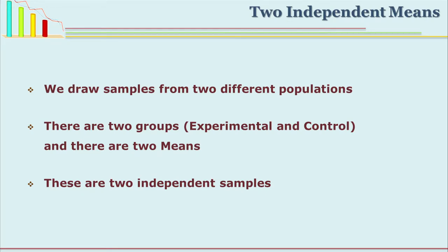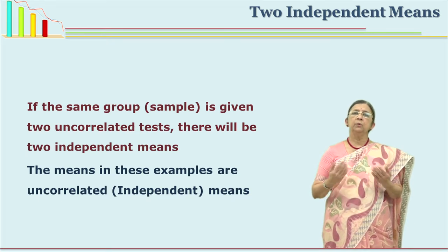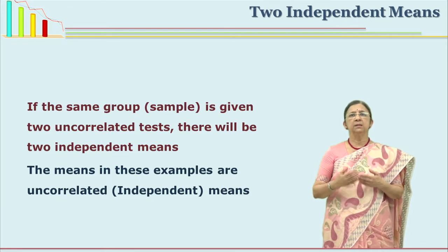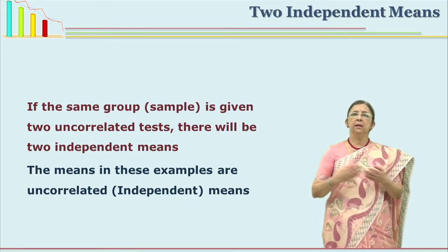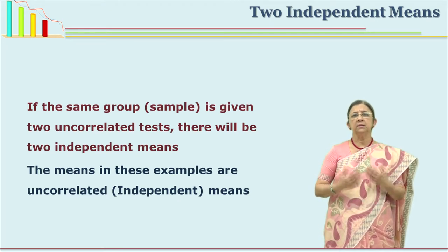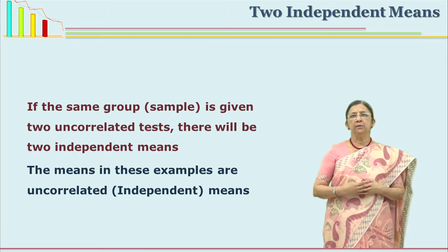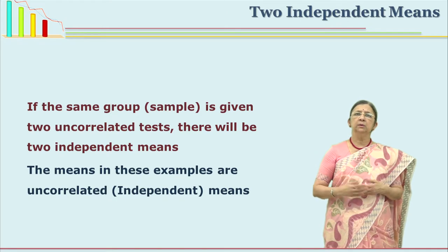Let us first see the difference between two uncorrelated or independent means. For example, if you take two groups — experimental group and control group — and give them a test, they are uncorrelated because the means come from two different sets. If you give the same group two different uncorrelated tests, for example Marathi and science, the means of those are also called uncorrelated means.